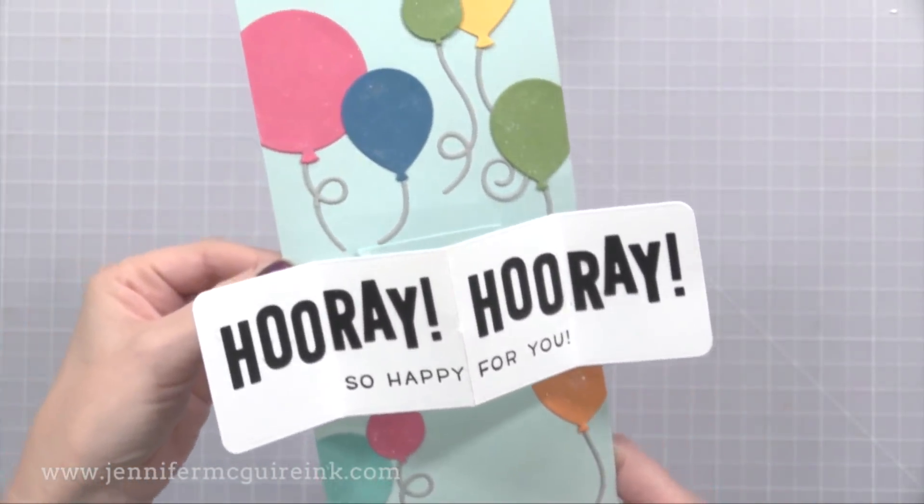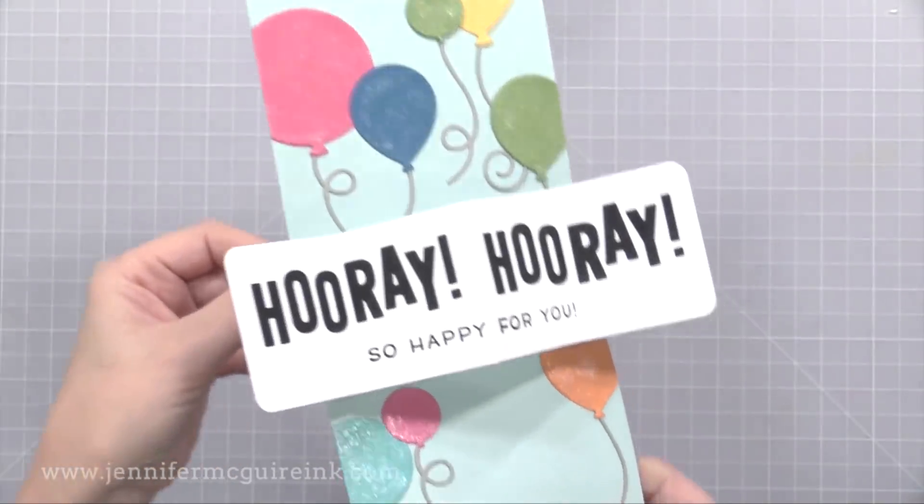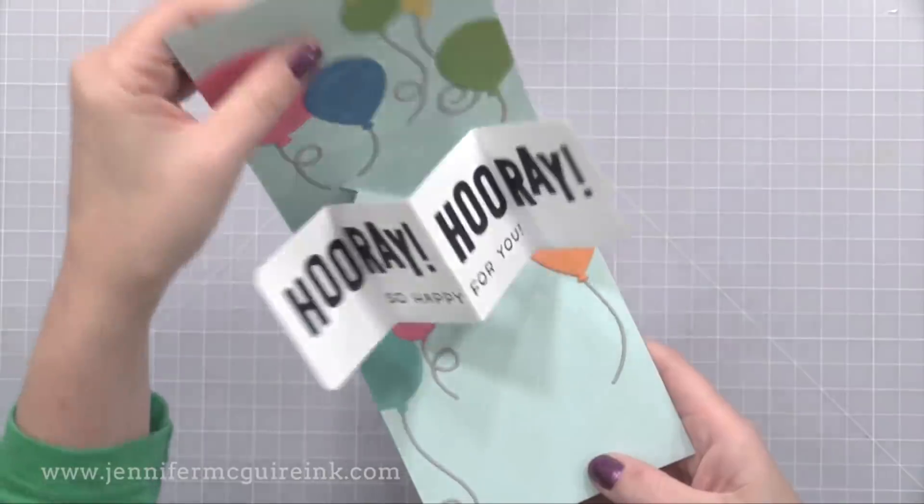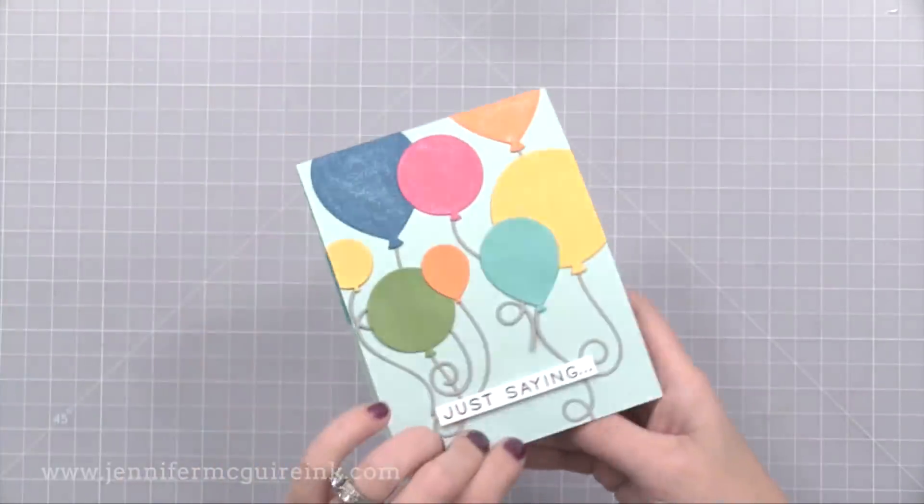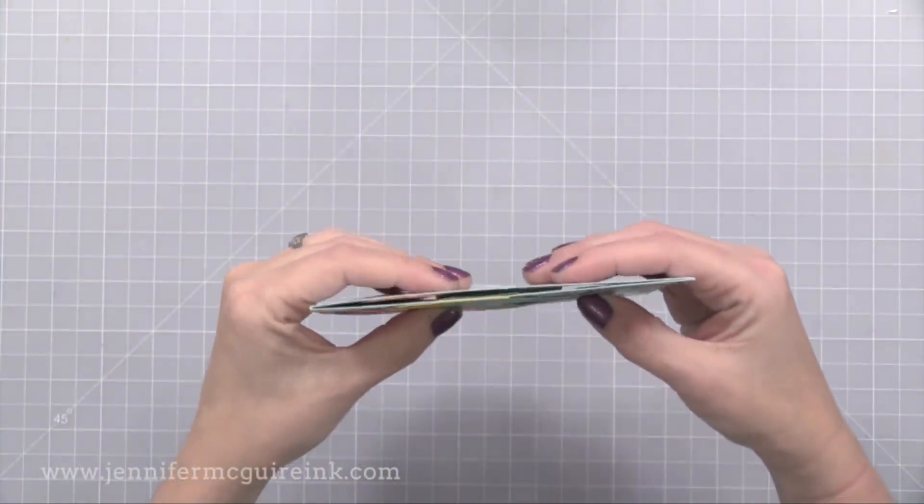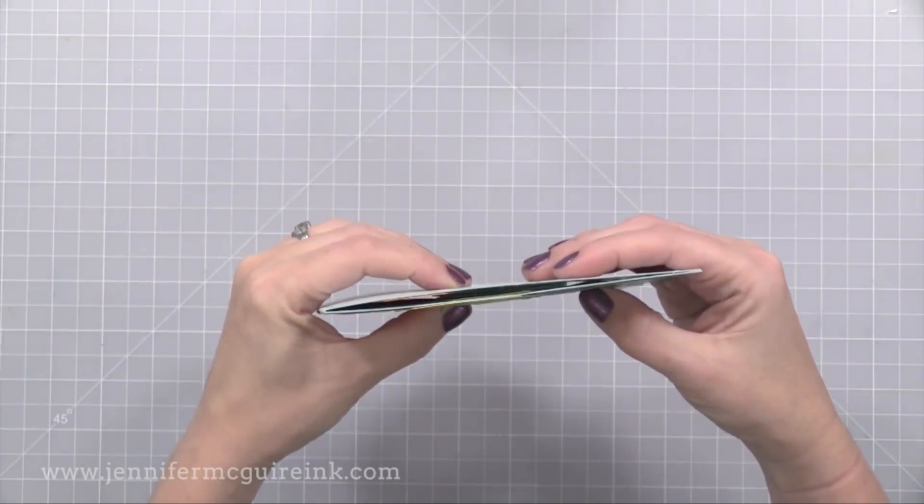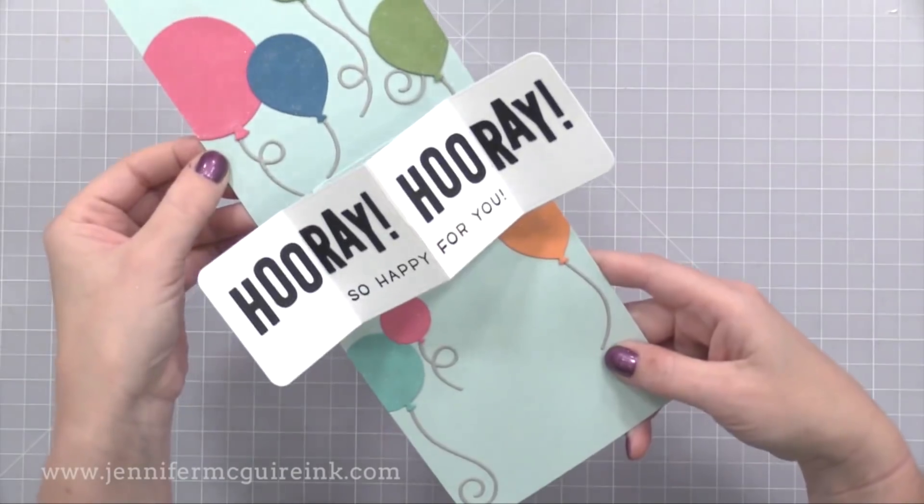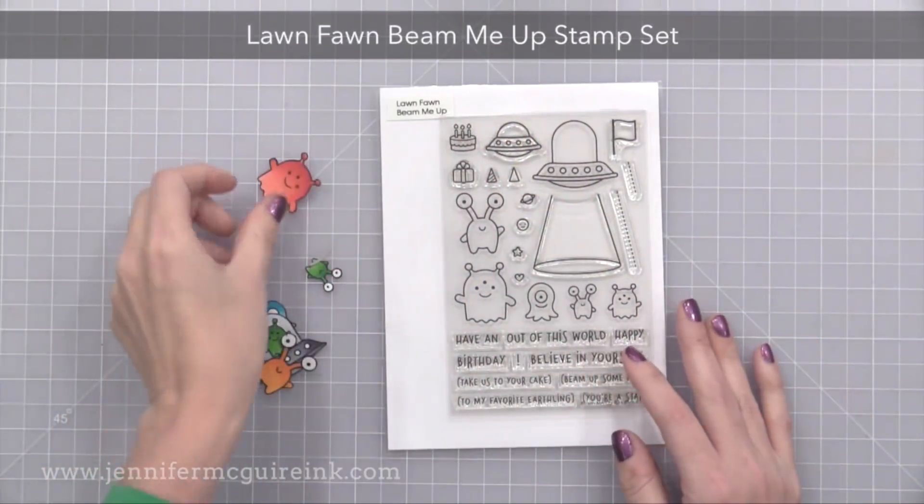On the front I stamped Just Saying from that same simple sentiment stamp set that the So Happy For You is from. Now you'll see there is a little bulk to this card because I added so many die cuts. You could keep it thinner by just doing stamping instead. But really it's not that bad. I'm really excited to make more of these cards. I just think they're so fun and unexpected.